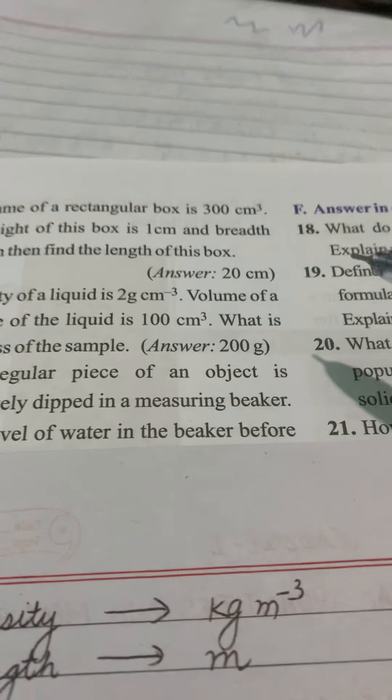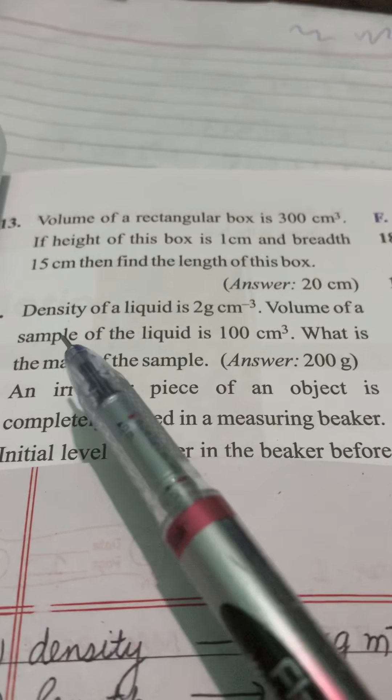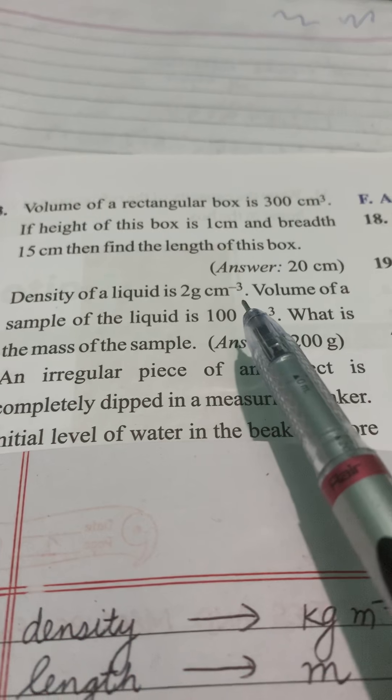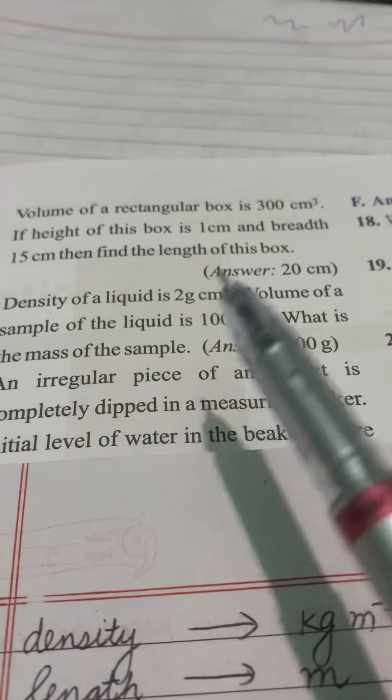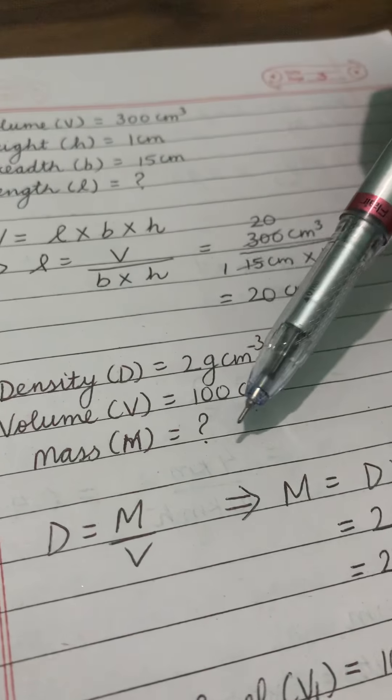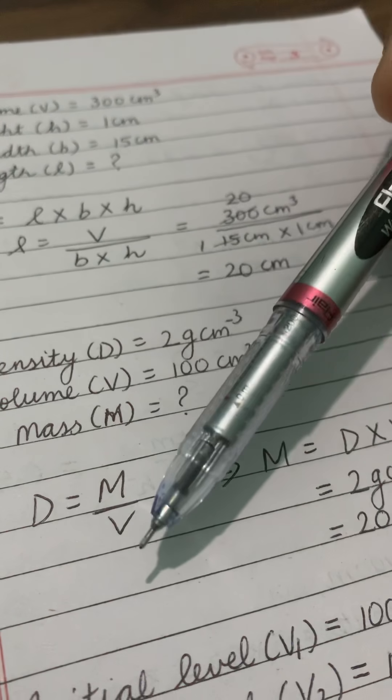Next is your density and we will. Okay let us do this also in this video only. Density of the liquid is given to you 2 gram per centimeter cube. Volume is given to you 100 centimeter cube. You have to find the value of mass. Density is given to you. Volume is given to you. And you have to find the value of mass. Now we know that density is equals to mass divided by volume.